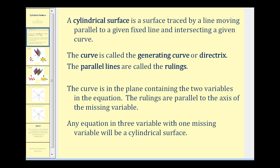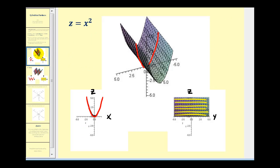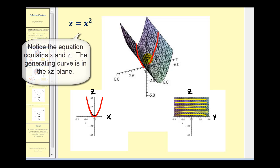Let's take a look at a couple of examples. Here we see the graph of z equals x squared. If we take a look at just the graph of this in the xz plane, it would look like this parabola. However, if we graph this using the xyz coordinate system, it would become a three-dimensional surface. The red curve here in the xz plane would be our generating curve.